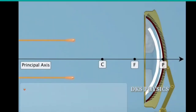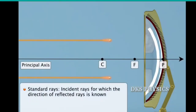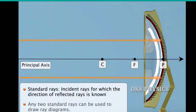Standard rays are incident rays for which the direction of the reflected rays is known. Any two standard rays can be used to draw ray diagrams. The standard rays used for drawing ray diagrams are as follows.